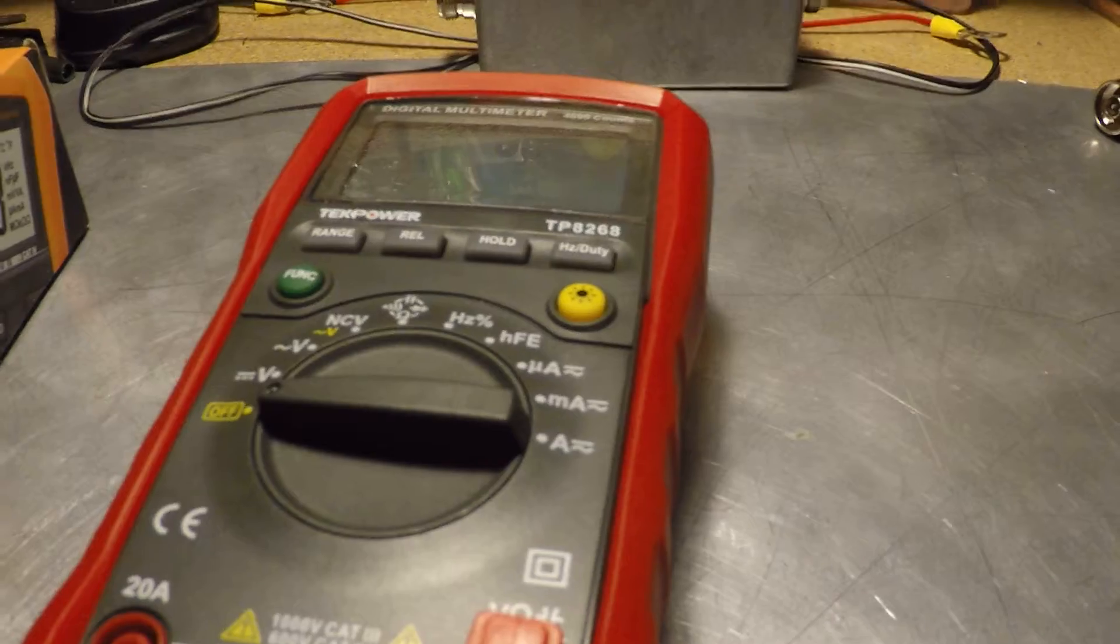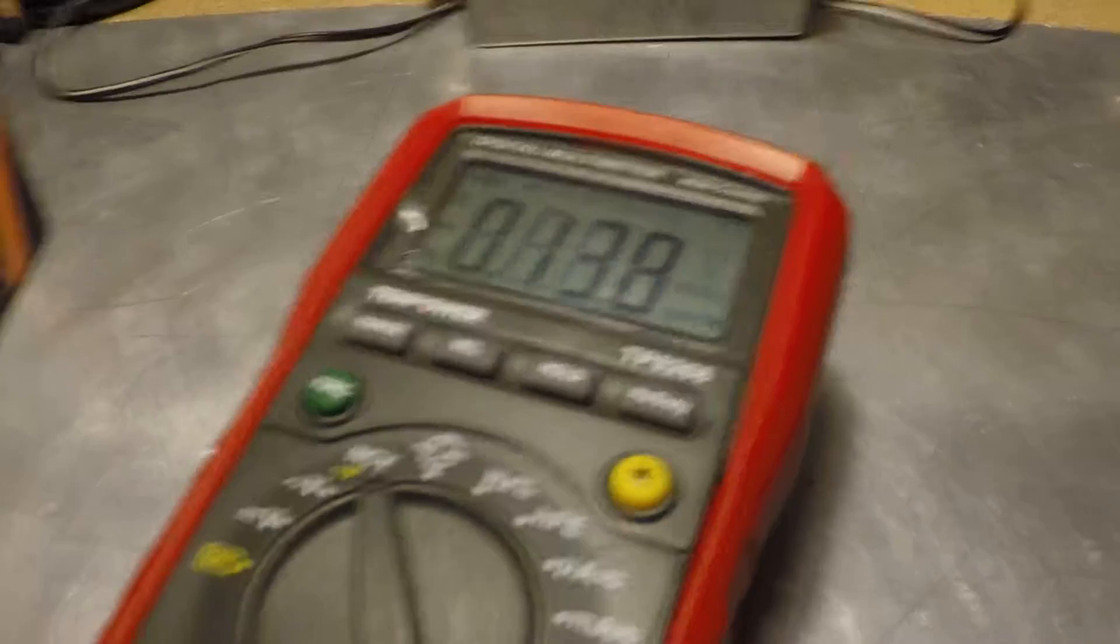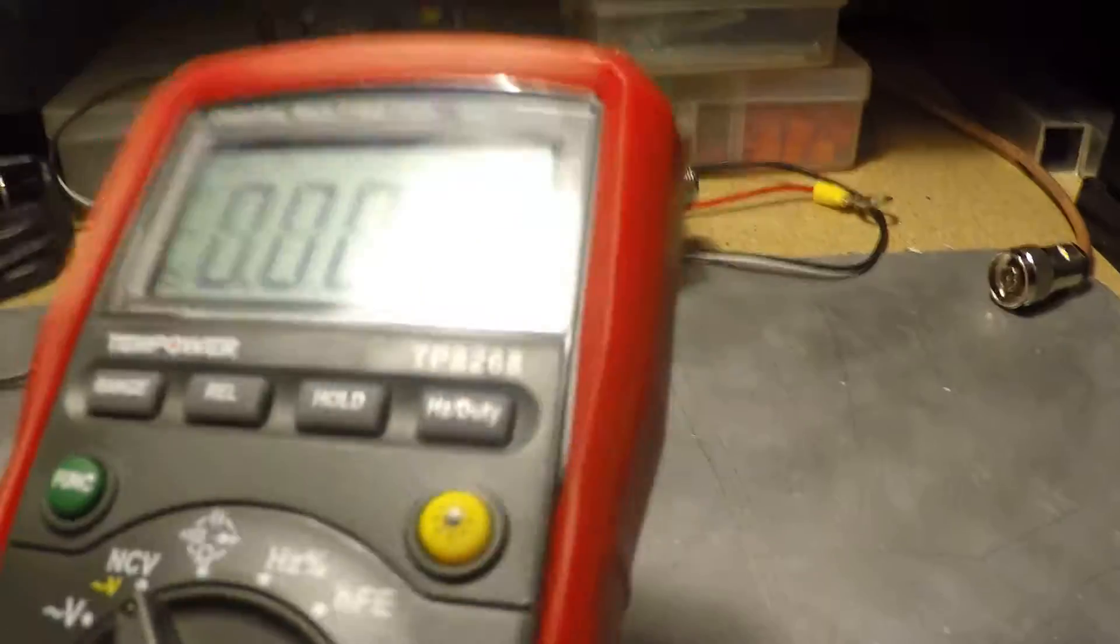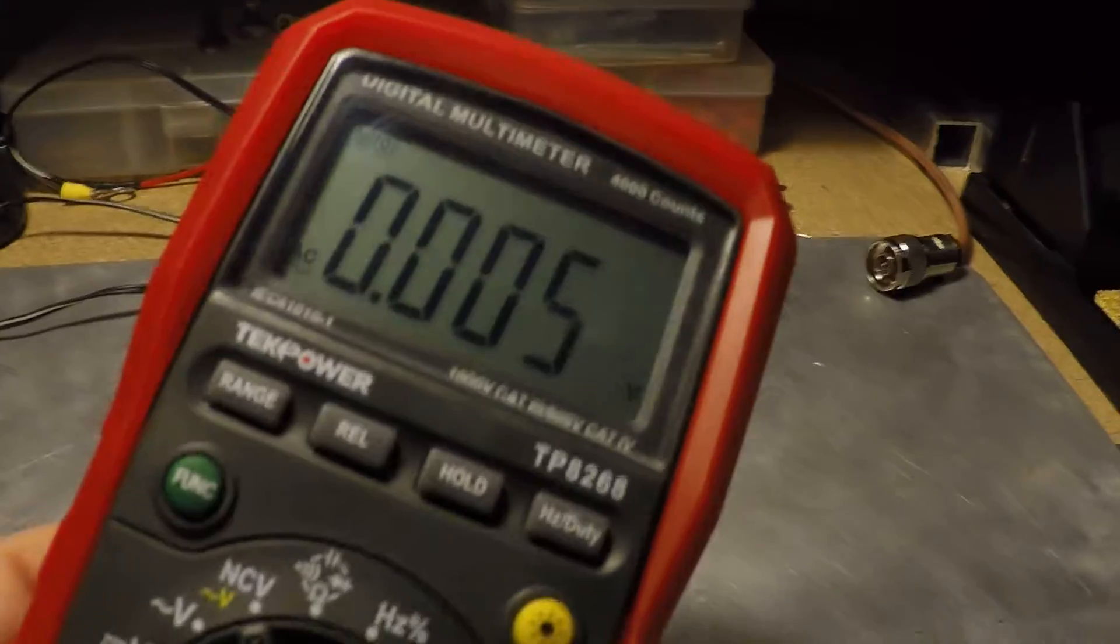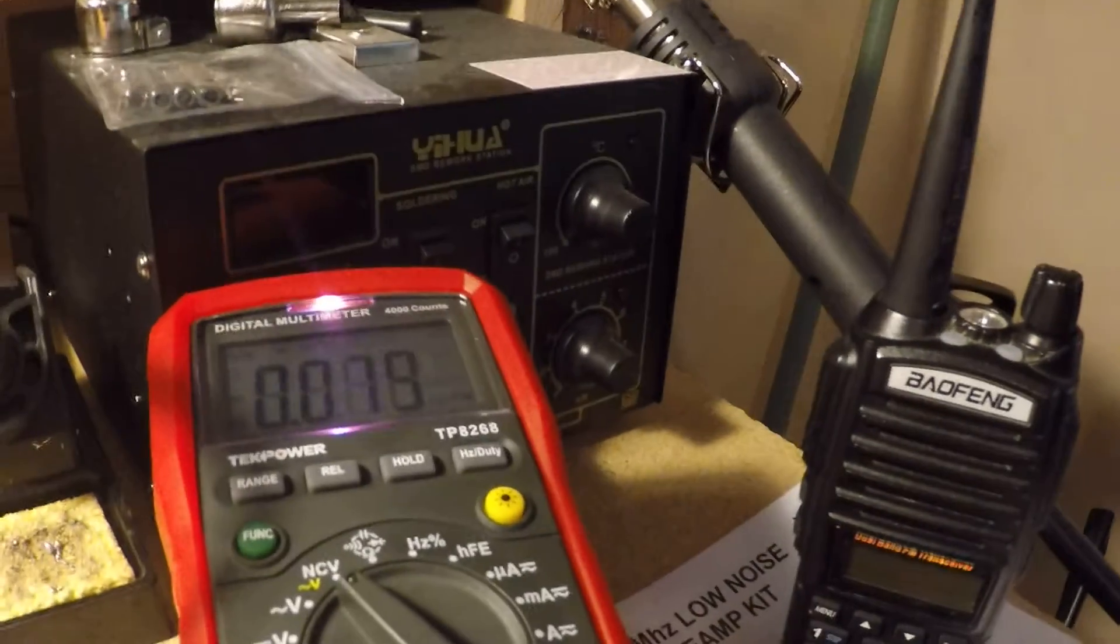NCV stands for non-contact voltage. I didn't fully understand what it did, but it's really pretty cool. Anytime you get the head of the multimeter near something, like my soldering station here, it immediately tells you there's a current.